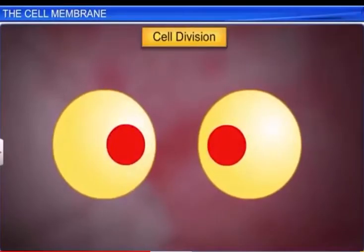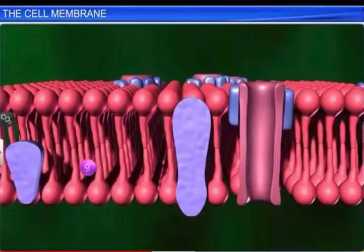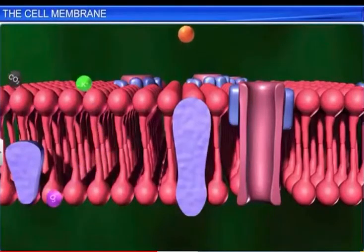The cell membrane also guards the entry and exit of different molecules and ions in and out of the cell. However, the cell membrane is selectively permeable.